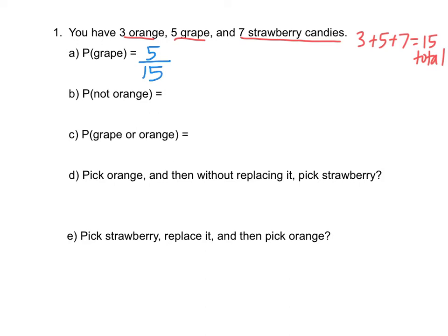With fractions, all of your answers should be in simplest form. So simplify that — if you divide by five, you get one over three. I also showed you how to simplify fractions on Desmos or the graphing calculator, so you could always do that too. For the probability of not getting an orange: if I have 15 total candies and three of them are orange, 15 minus three means 12 candies are not orange. Or we could just say if it's not orange, it must be grape or strawberry — five plus seven is also 12. So the probability we don't get an orange would be 12 out of 15. If I divide by three, that ends up being 4 fifths.